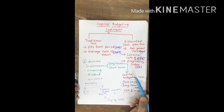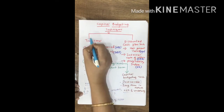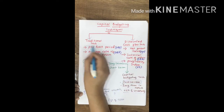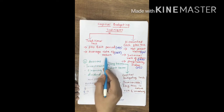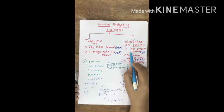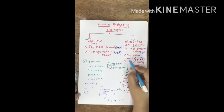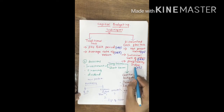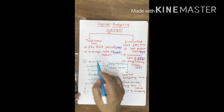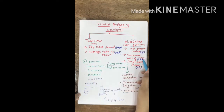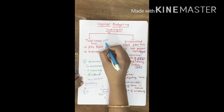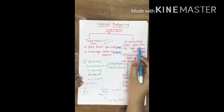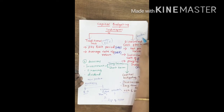These capital budgeting techniques are classified into two: traditional techniques and discounted cash flow techniques. Under traditional techniques, we have two methods — payback period method and average rate of return method. Under discounted cash flow techniques, we have net present value method, internal rate of return method, and profitability index method — or in short, PBP, ARR, NPV, IRR, and PI. Traditional techniques are also called non-discounted cash flow techniques, and discounted cash flow techniques are also called modern techniques.